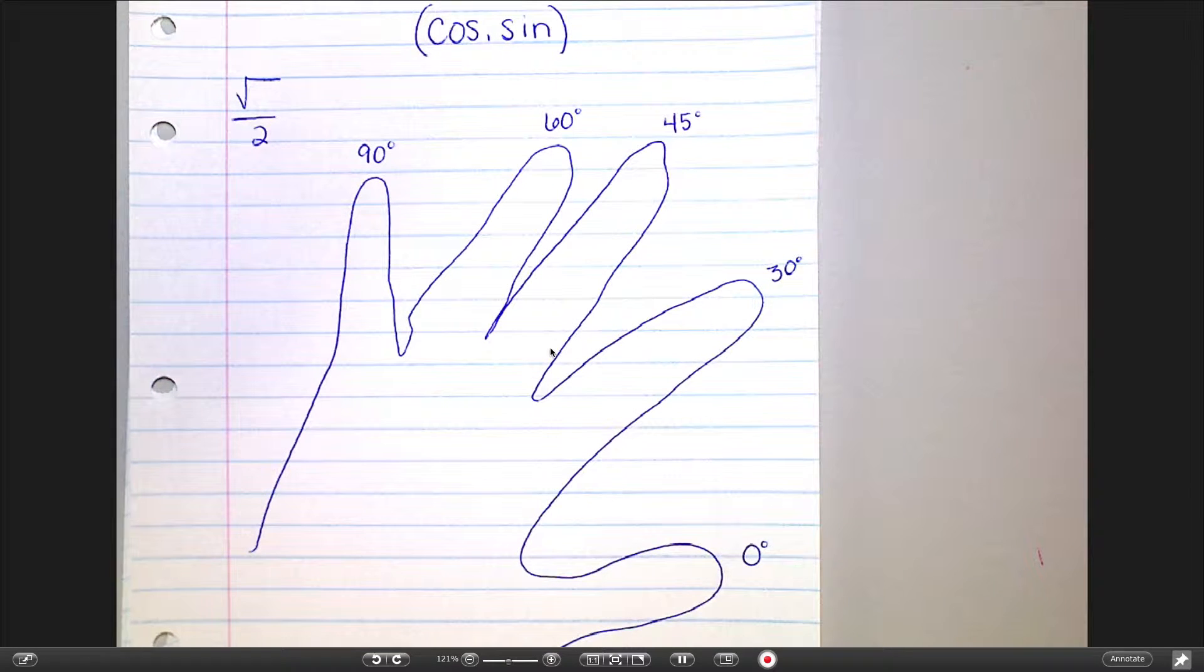So, there is a trick for memorizing your cosines and sines of 30, 45, and 60, which for your exact value quiz tomorrow, that takes care of 6 out of the 9 things that you have to memorize.